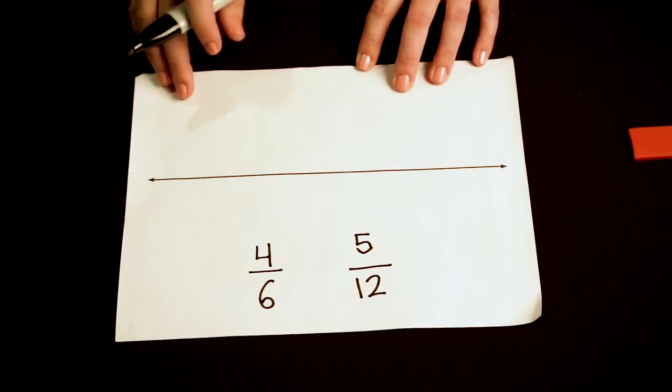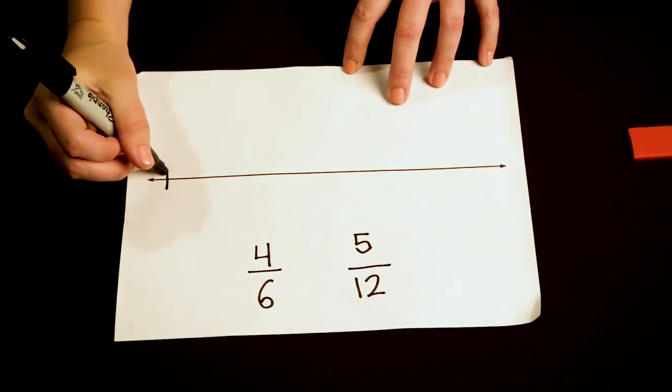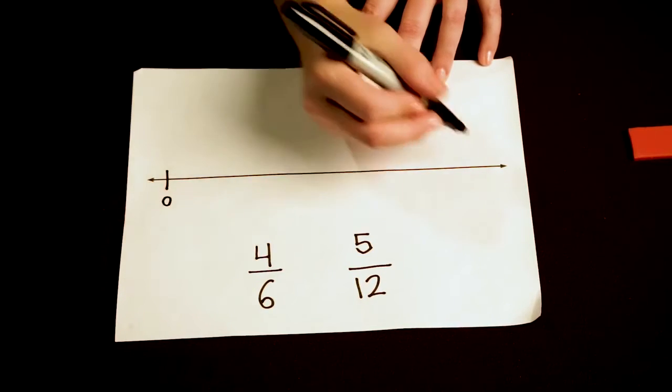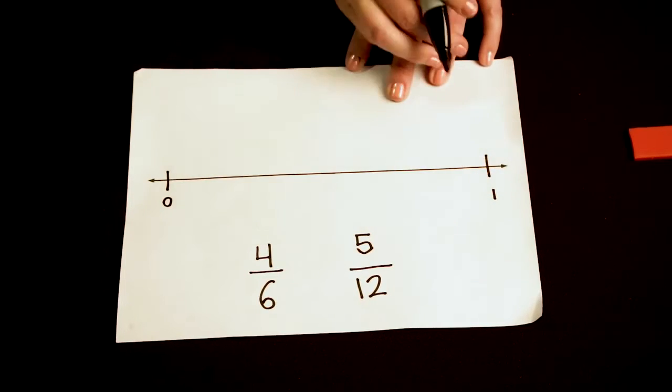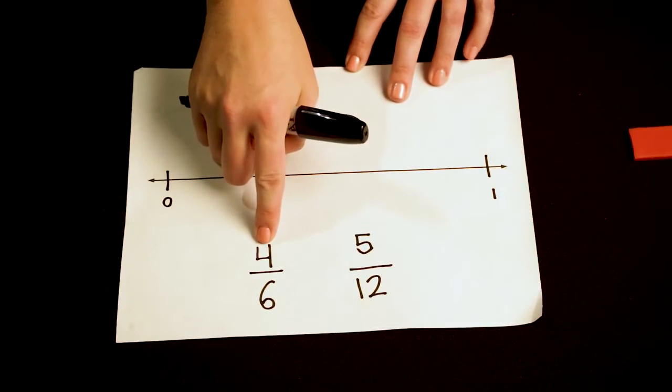Let's think about putting these fractions on a number line. Here on my number line I'm going to mark 0 and over here I'm going to mark 1. Let's start with 4/6.